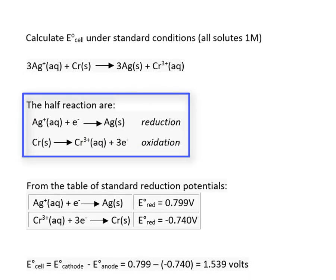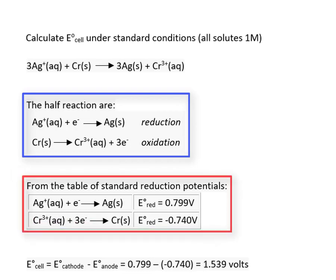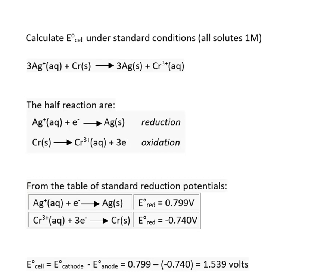The voltages for the half reactions are reported as reduction potentials. Even though the chromium is undergoing oxidation, we look up the reduction potential for the chromium half reaction.